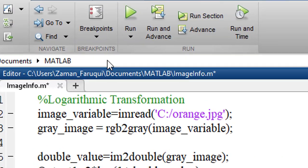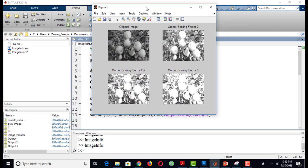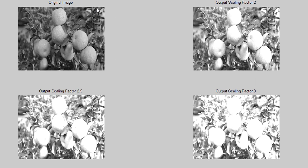Let's run the program. The first image is the original one. The second one is the result when we used 2 as the impact factor. When we increase the impact factor from 2 to 2.5, this is the result. And this is the result for scaling factor 3.